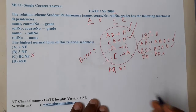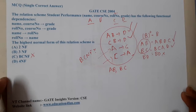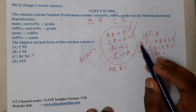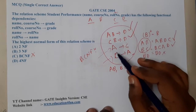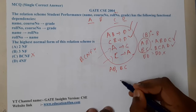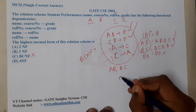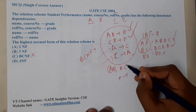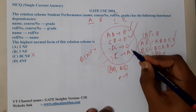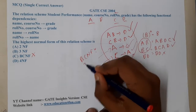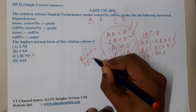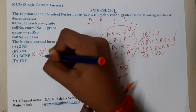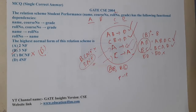Looking at the third and fourth dependencies more carefully: both involve prime-to-prime attribute relationships. A is a prime attribute and C is a prime attribute, so these are prime-to-prime dependencies. With that understanding, we can conclude that this schema is in 3NF. This is a straightforward normalization question.